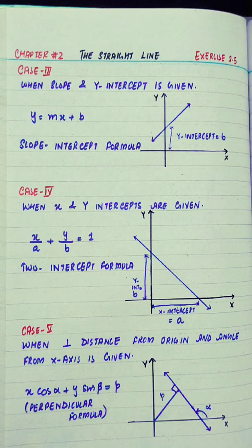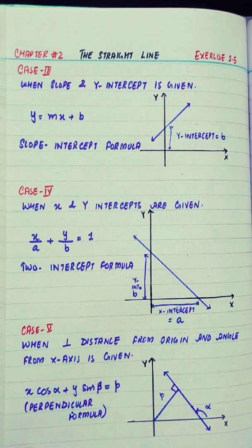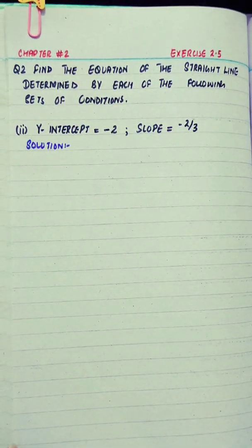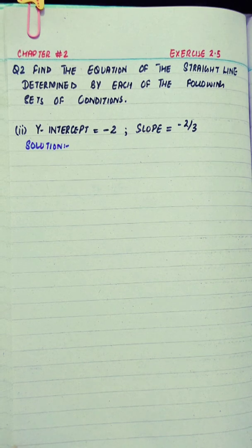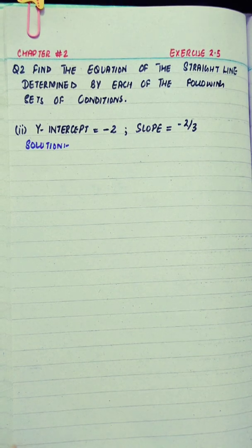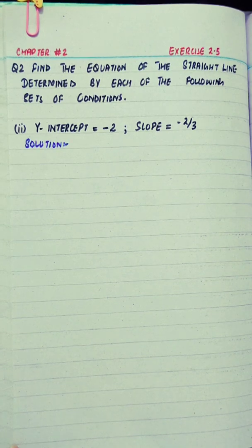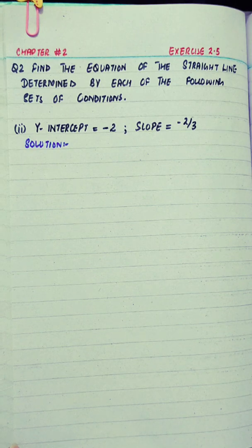Now we will solve questions so that these cases become more clear. Question 2: find the equation of the straight line determined by each of the following set of conditions. Part 2: y-intercept equals minus 2 and slope equals minus 2 by 3.